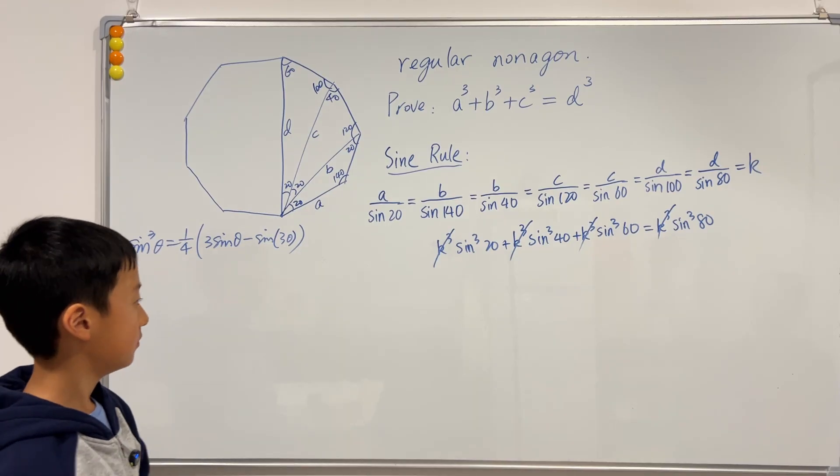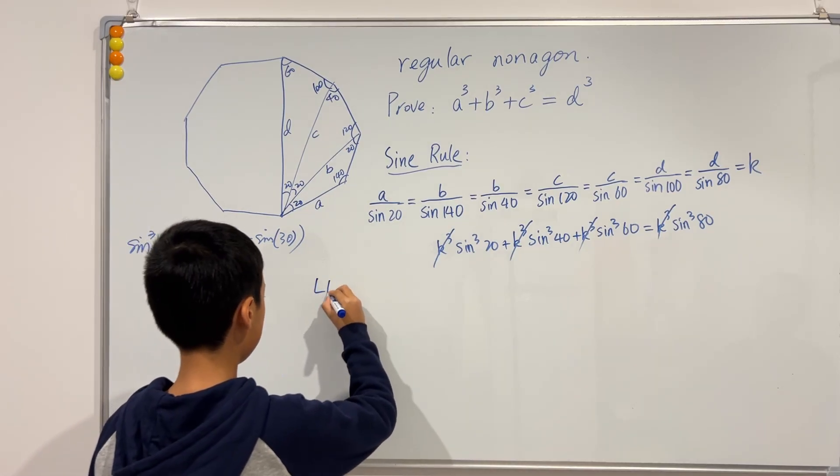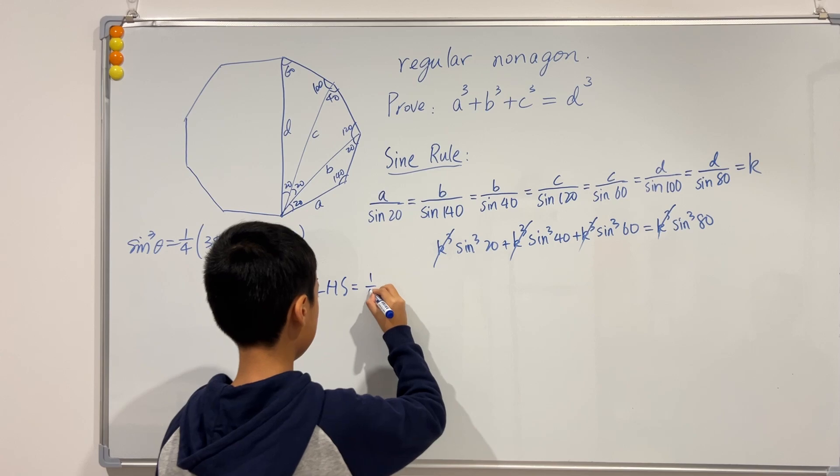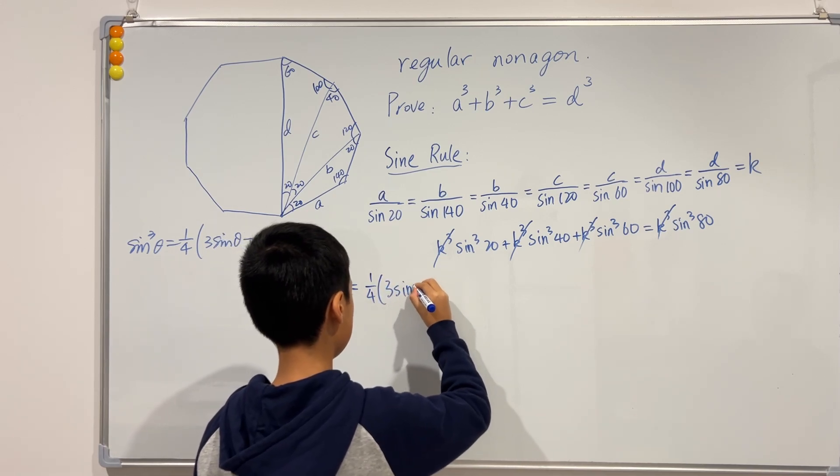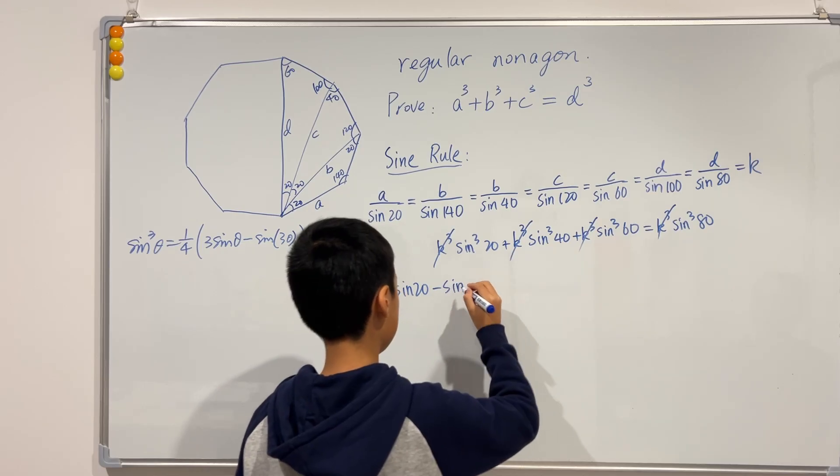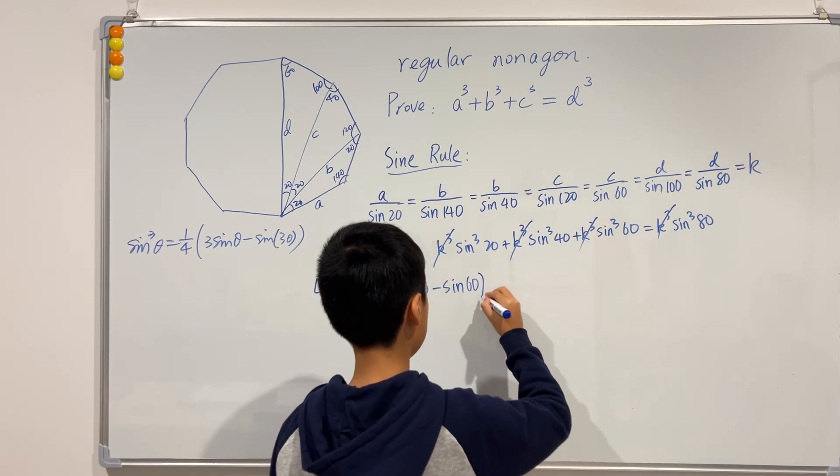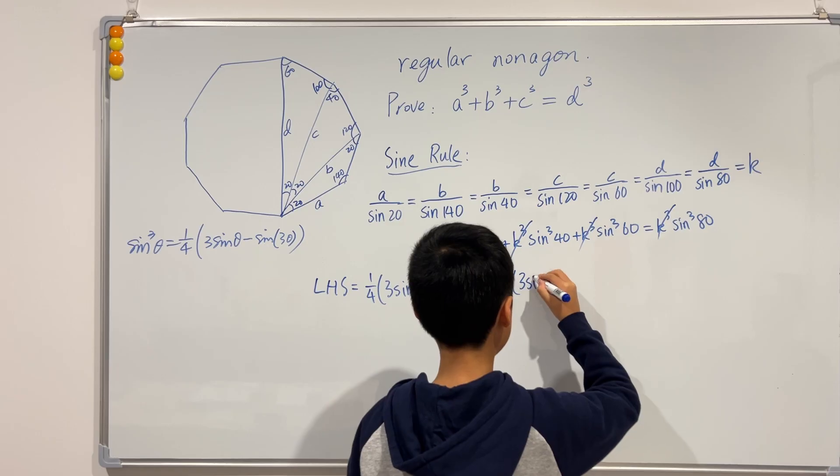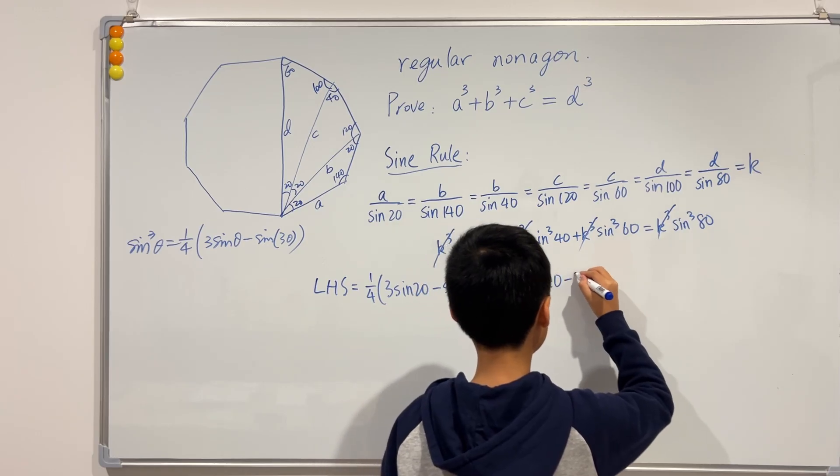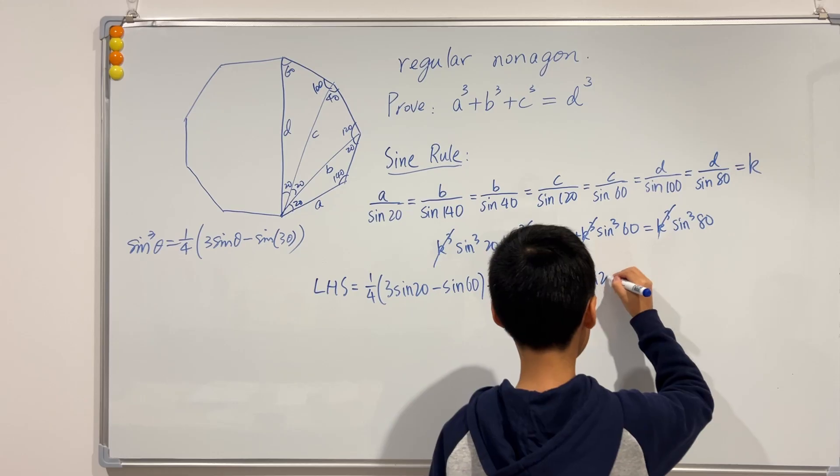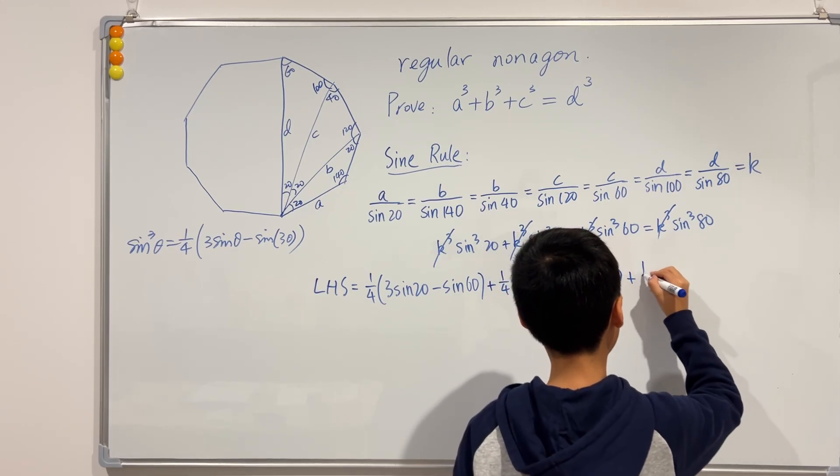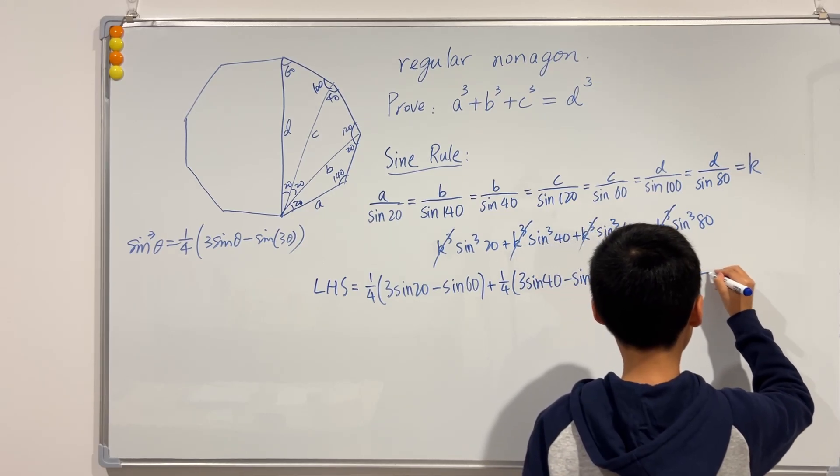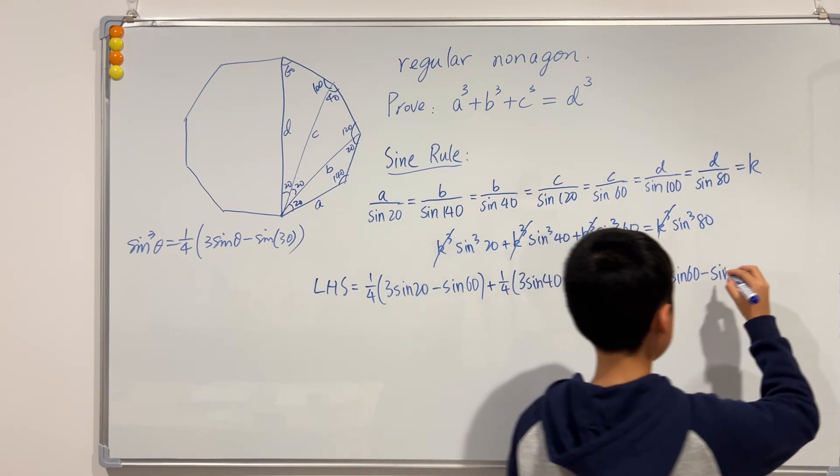So we can express this sine cubed of theta into this. So this will be, the left-hand side will be sine cubed of 20, sub this in, be 1/4 times 3 sine of 20 minus sine of, minus sine of 3 times 20 is 60 plus sine cubed of 40. That will be plus 1/4, 3 sine 40 minus sine of 120, plus sine cubed of 60 will be plus 1/4, 3 sine 60 minus sine of 180.